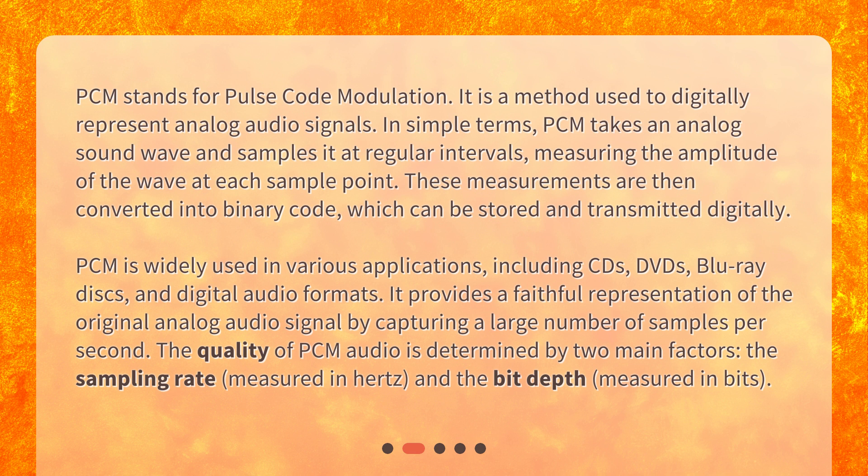PCM is widely used in various applications, including CDs, DVDs, Blu-ray discs, and digital audio formats. It provides a faithful representation of the original analog audio signal by capturing a large number of samples per second. The quality of PCM audio is determined by two main factors: the sampling rate, measured in hertz, and the bit depth, measured in bits.